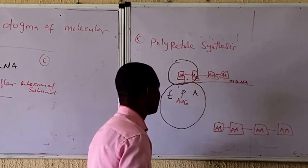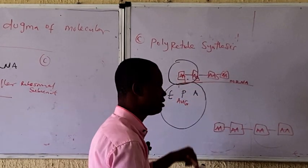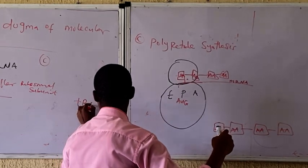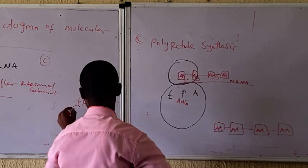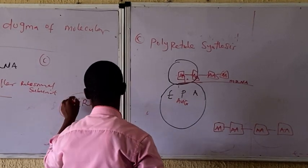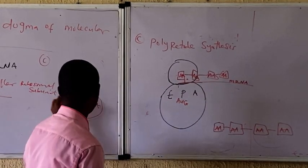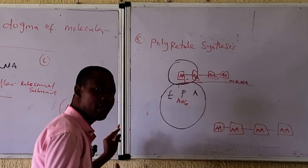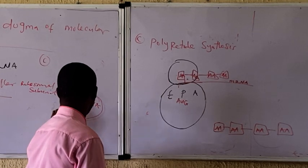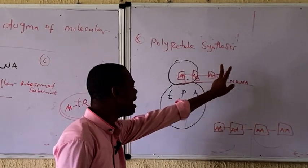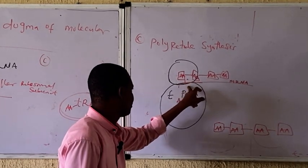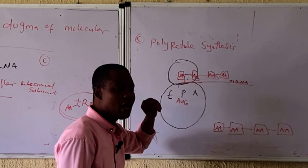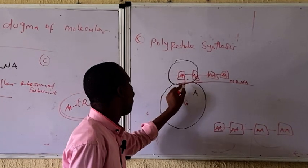The final step is polypeptide synthesis. Under polypeptide synthesis, tRNA brings the activated amino acid to the ribosome. After activation of amino acid in step one, the activated amino acid was attached to tRNA in step two. Now, tRNA brings that amino acid to the mRNA that is attached to the ribosome, and the tRNA reads the codon on the mRNA.